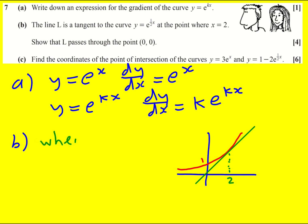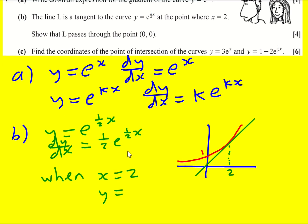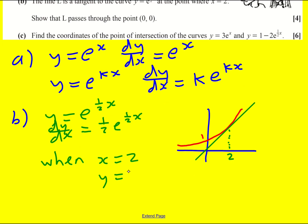So when x equals 2, y is now equal to e to the half x, and because I need the gradient as well, dy by dx is going to be a half e to the half x, just like I had above. So when x is 2, y is going to be e to the half times 2, e to the 1, or just e.